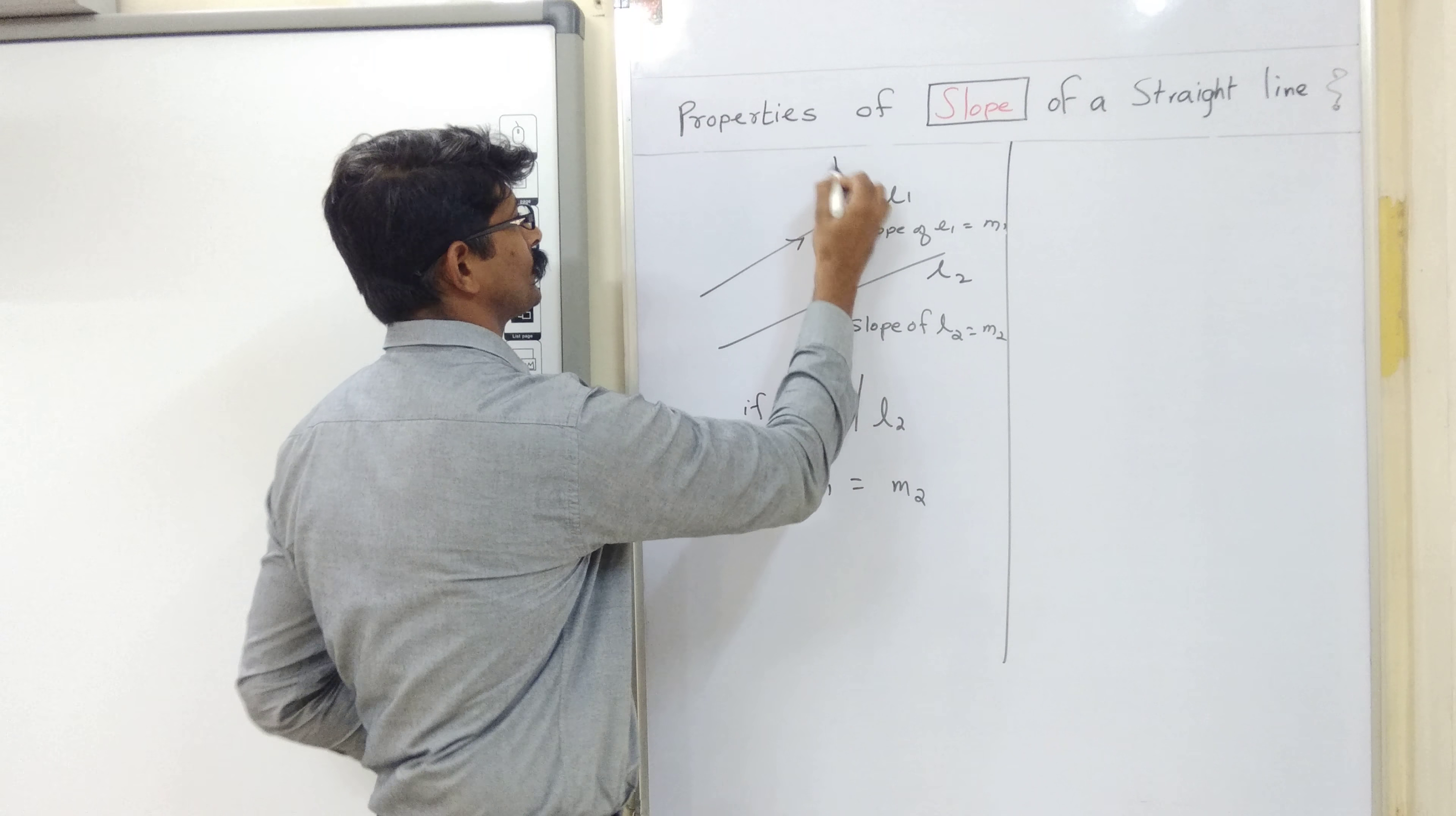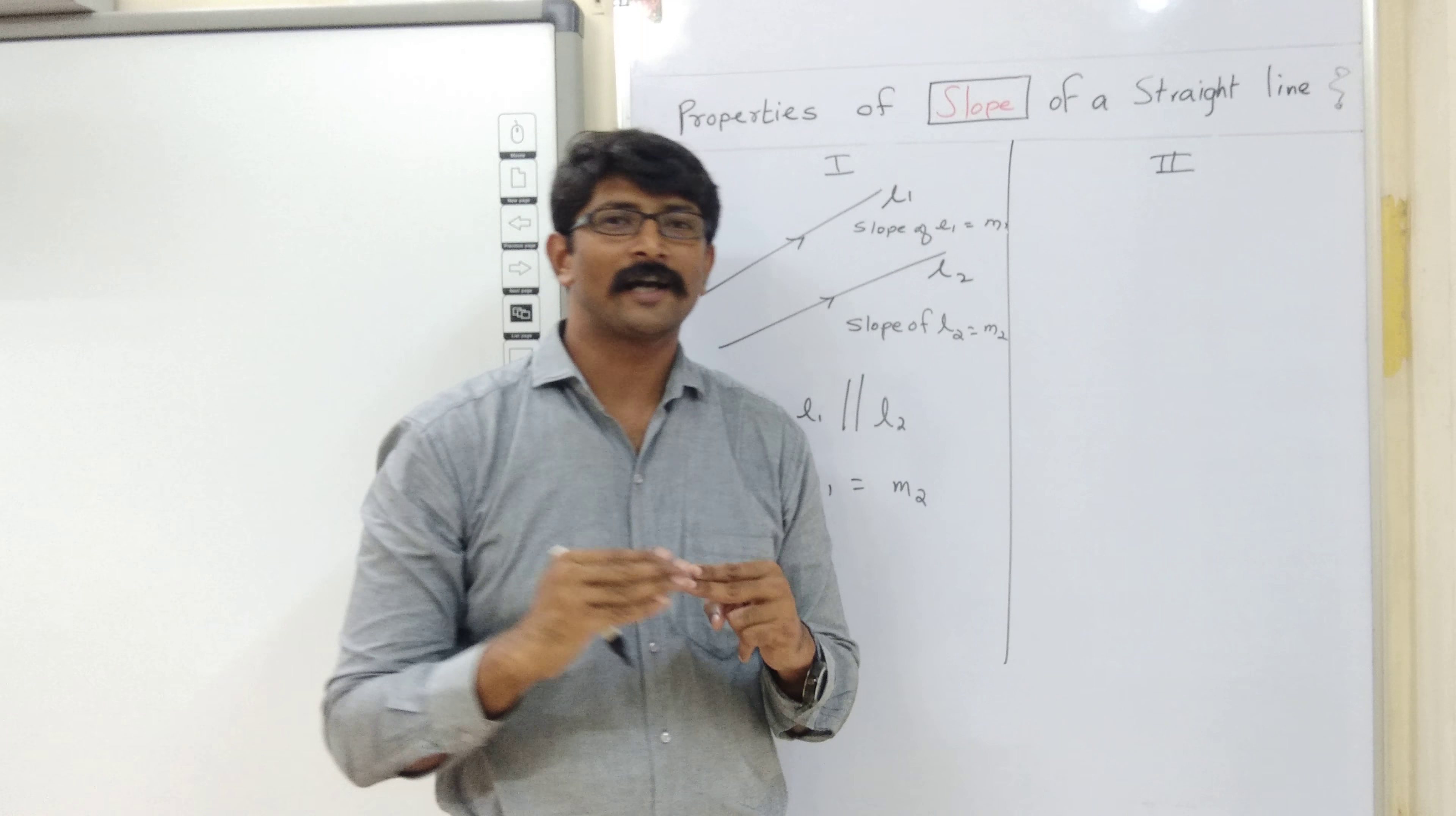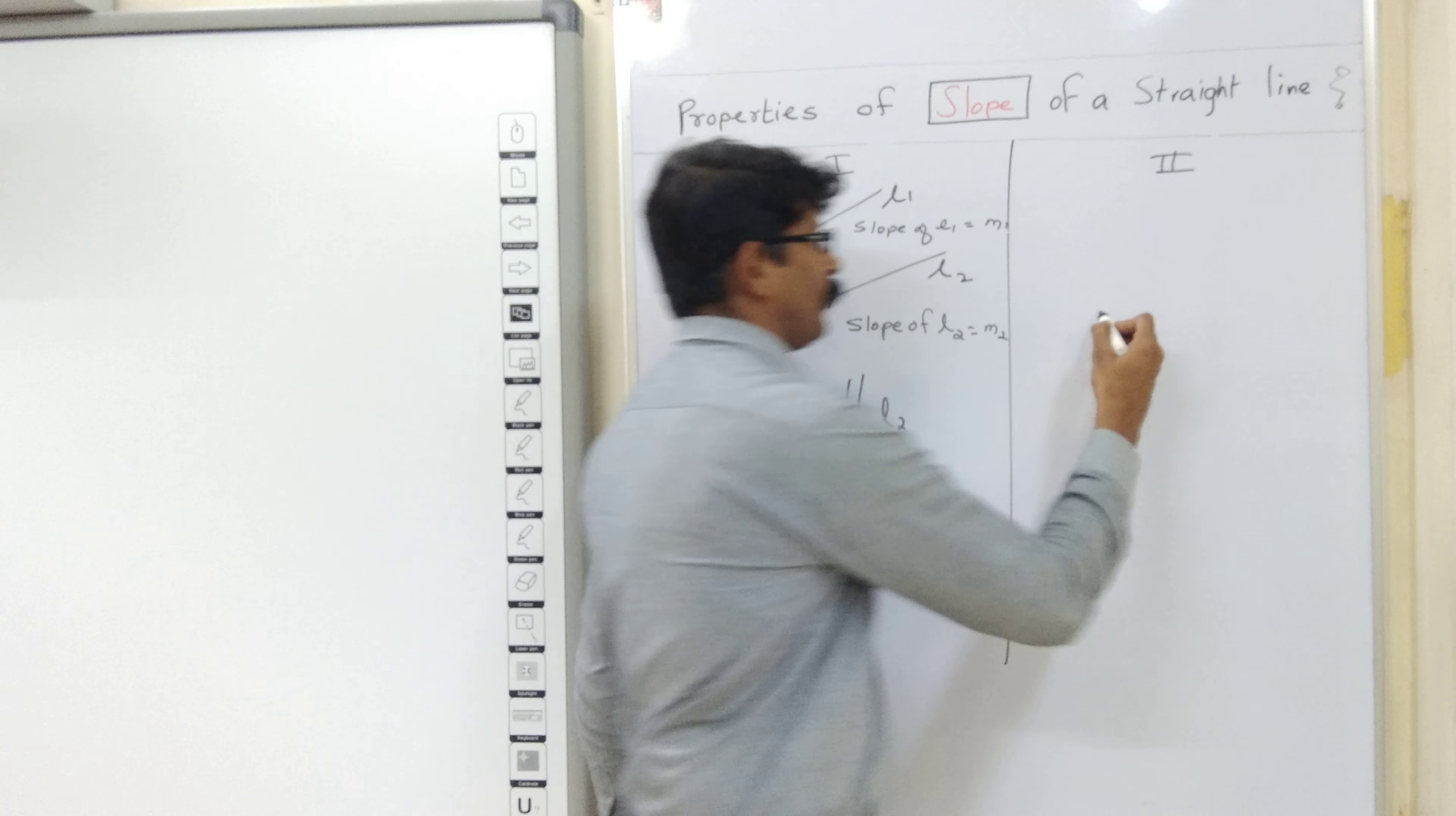And what is the second property? So, this is the first property when the lines are parallel. And what is the second property? If two lines are perpendicular to each other.